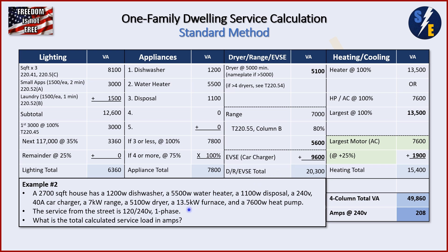Next is our heating. We have a 13.5 kW furnace — put that at 100%. We have a 7,600-watt heat pump — put that at 100%. We compare the two; our heating is larger, so 13,500 goes there. Take the largest motor of the building, which is the AC, and take 25% of that: 1,900. 13,500 plus 1,900 is 15,400. Taking our four column totals and adding them together, we get 49,860 VA. Divide by 240 volts and we have 208 amps for our service size.